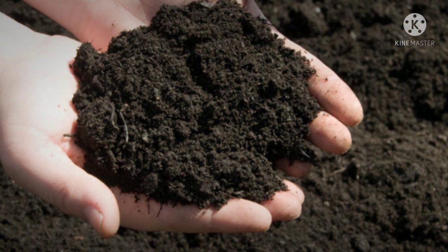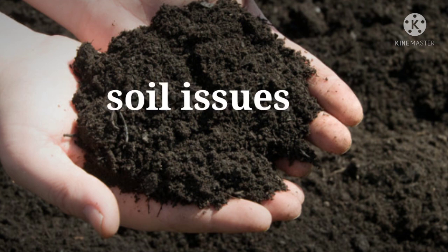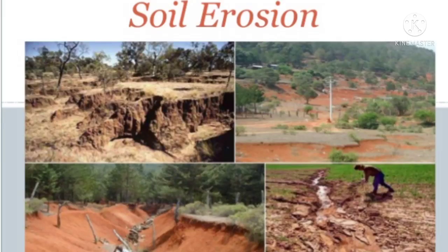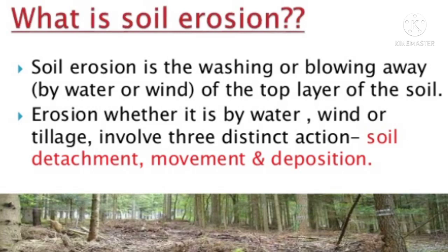Let us know about the soil issues and soil problems. Soil erosion is the washing or blowing away by water or wind of the top layer of the soil. Erosion, whether it is by water, wind, or tillage, involves three distinct actions: soil detachment, movement, and deposition.